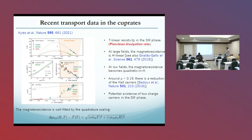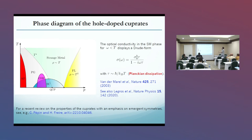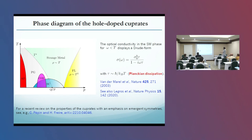The magnetoresistance is well fitted by the so-called quadrature scaling — the square root of T-squared plus H-squared. Here I show a very schematic phase diagram of the hole-doped cuprates, with a very rich phase diagram including magnetism, pseudo-gap, charge-density waves, superconducting phase, strange metal phase, and so on. The optical conductivity in this strange metal phase displays a Drude form. Despite it being a non-Fermi-liquid regime, it displays a Drude form.